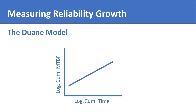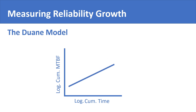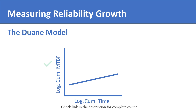The slope of this straight line represents reliability growth. The steeper the line, the more reliability growth. Conversely, the flatter the line, the less reliability growth. By having the data of mean time between failures and operational time, you can use the Duane model to model the reliability growth of your equipment.